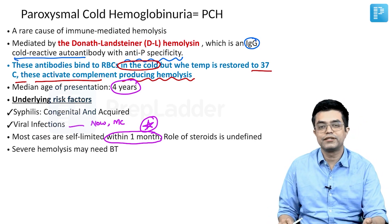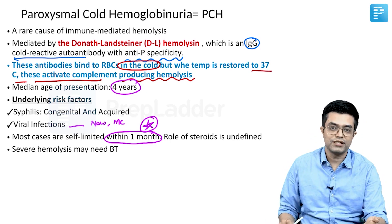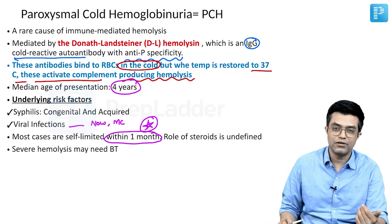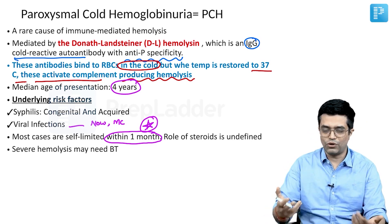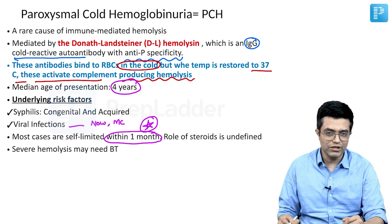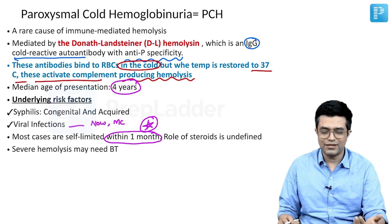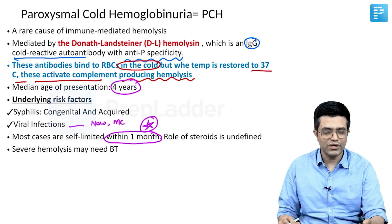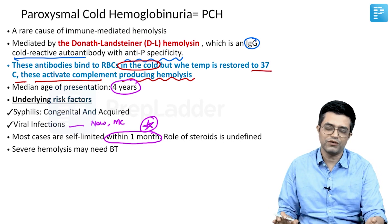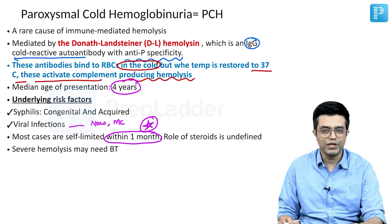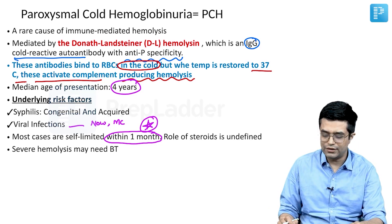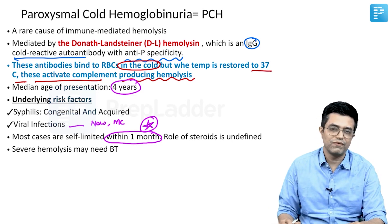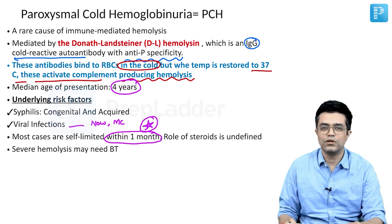Certain tertiary care centers in Western countries use P-negative blood for transfusion, but such specialized testing is not needed in most settings. Majority of these patients can be given routine blood transfusions. Overall, PCH is a condition with a relatively good outcome.